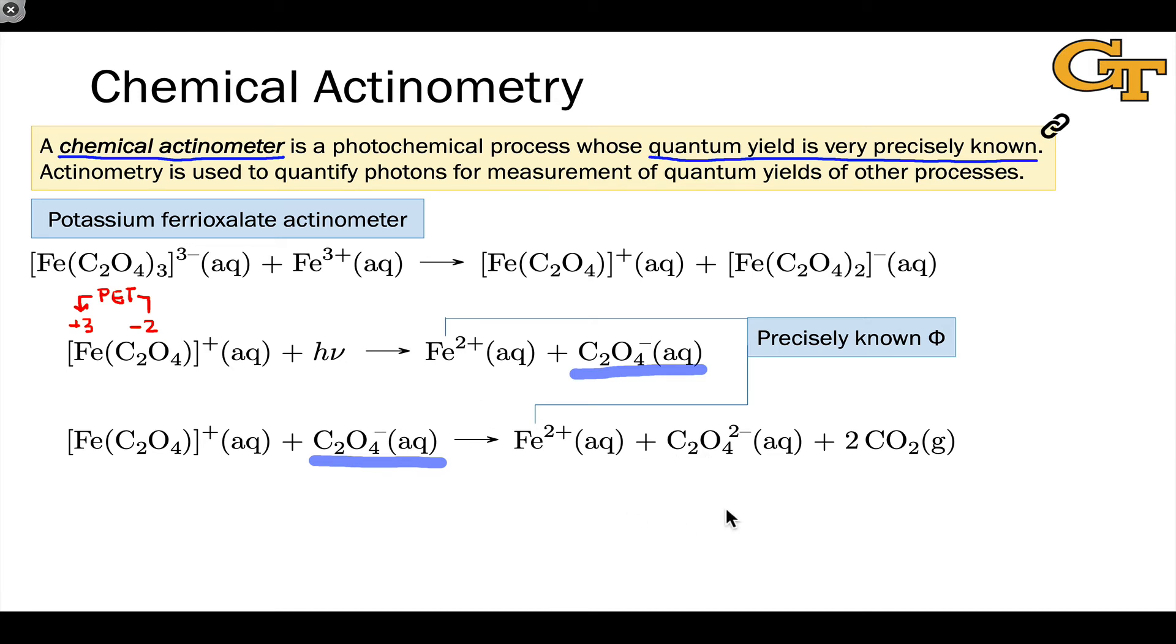So we know the quantum yield of this overall light-driven reduction of Fe3+ to Fe2+ and oxidation of the oxalates to CO2. One of the reasons this is precisely known is that we can very precisely quantify the amount of Fe2+ generated through complexation with a phenanthrolene ligand.